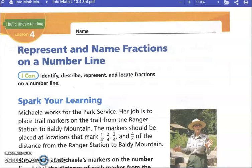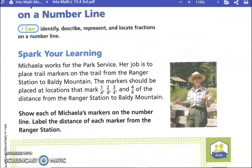Makaylo works for the park service — she's one of the park rangers at a National Park, kind of like the police in the state parks. Her job is to place trail markers on the trail from the ranger station to Baldy Mountain. The markers should be placed at locations that mark one-fourth, two-fourths, three-fourths, and four-fourths of the distance from the ranger station to Baldy Mountain.